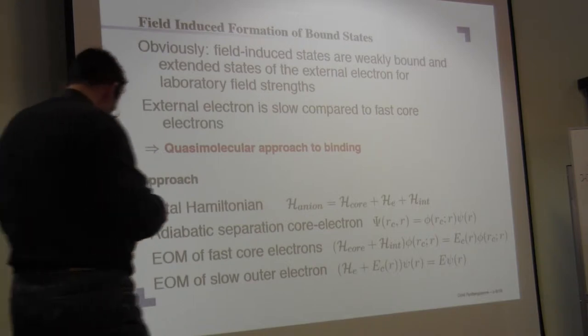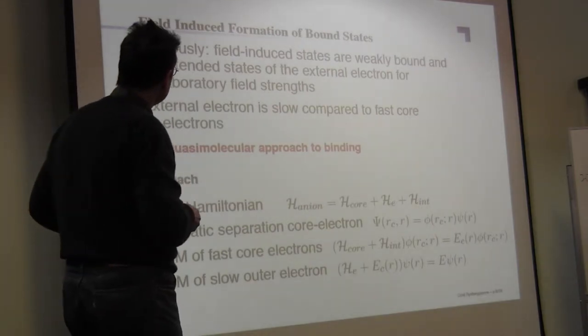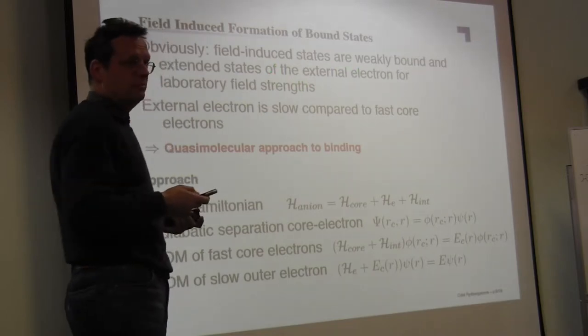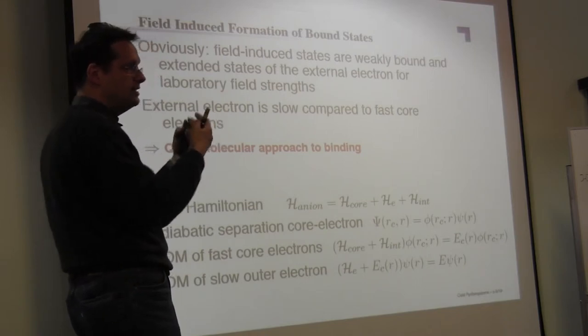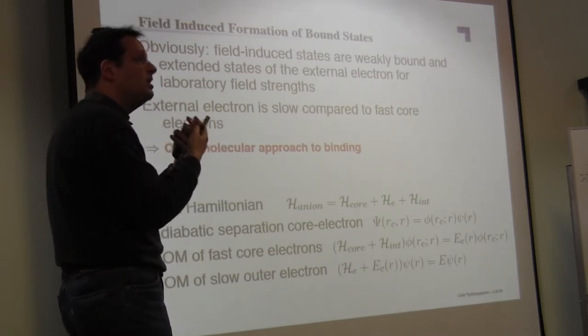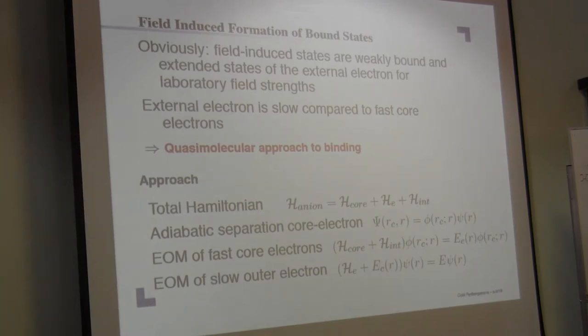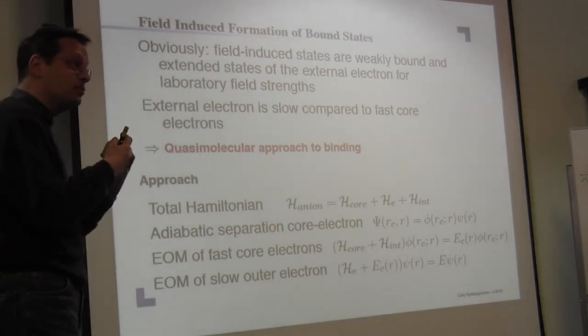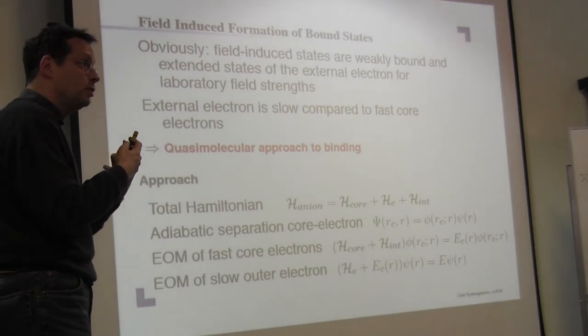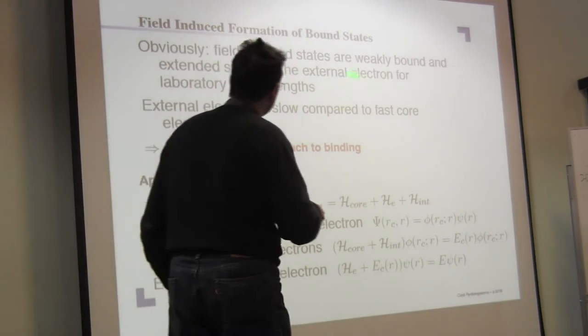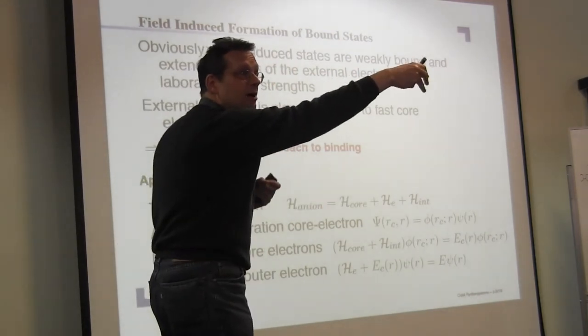How we approach this problem is as follows. These field-induced states are weakly bound. So the whole prediction of field-induced bound states, if you go to the laboratory fields, they are weakly bound as Rydberg states are too. If you go to n equal to 30, 40, 100, this is extremely weakly bound. Similar here, but here the binding depends on the magnetic field strength, because it is magnetic field-induced, as you shall see.